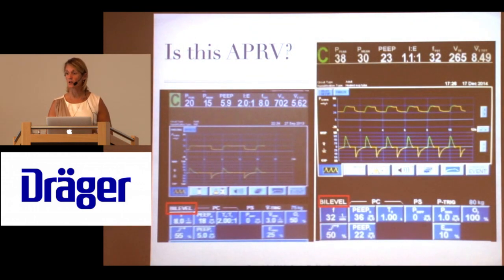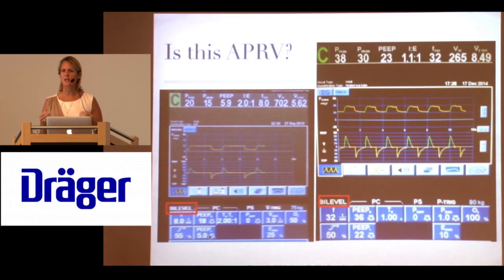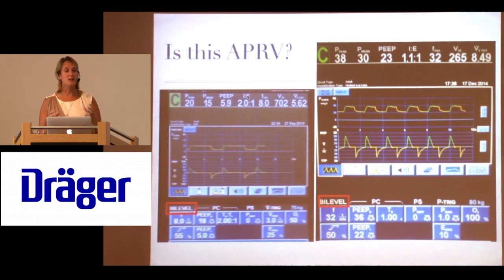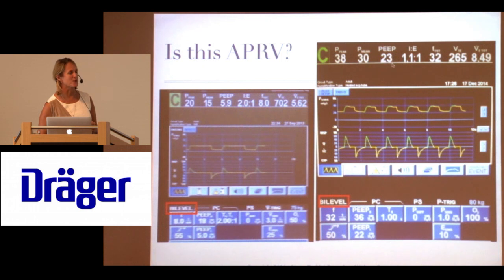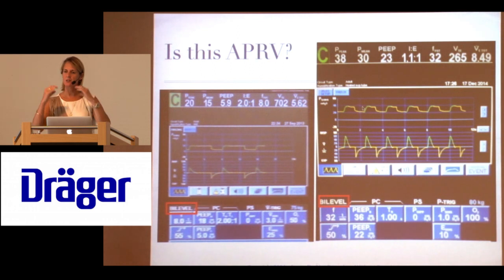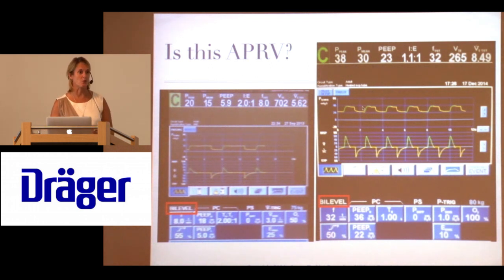Is this APRV? It says APRV on the ventilator, the mode reads APRV — but is it really APRV as initially designed? This example is 2-to-1 pressure control or BiPAP: a pressure of 18, PIP of 5, rate of 8, with a 2-to-1 I:E ratio. And here is a very extreme version with a rate of 32, pressure of 36, PIP of 22, and I:E ratio of 1-to-1. If you look at any studies using APRV, please go to the methods section and check how APRV was applied.